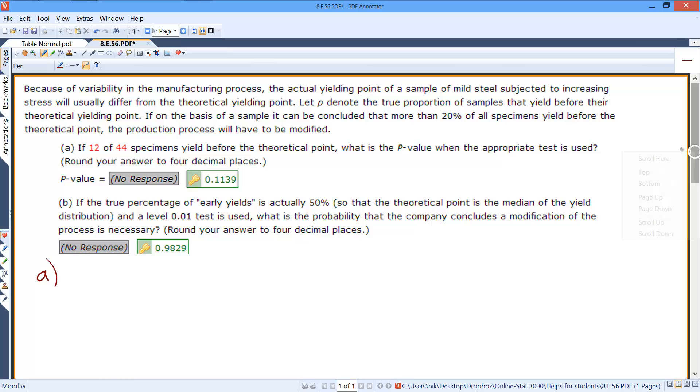So first of all, we realize that we're dealing with proportions. And for our null and alternative hypotheses, we basically want to know if the proportion is more than 20%.